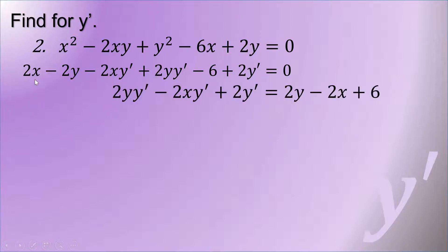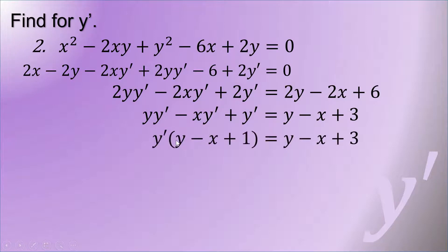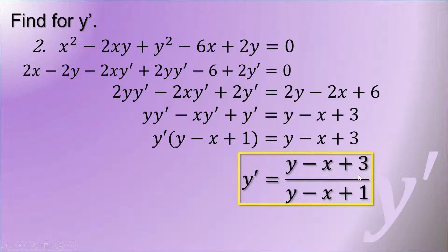Transferring all terms without y prime from left to right gives 2y minus 2x plus 6. Canceling the common factor of 2, we get y y prime minus x y prime plus y prime equals y minus x plus 3. Factoring out y prime on the left gives y prime times the quantity y minus x plus 1. Dividing both sides by y minus x plus 1, y prime equals the quantity y minus x plus 3 all over y minus x plus 1.